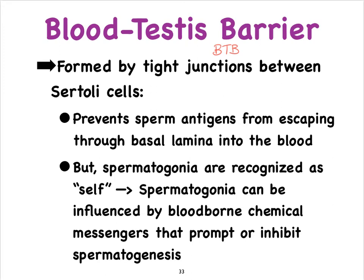It's important for the spermatogonia to be present in the basal compartment, which is exposed to the blood, because those spermatogonia must be able to be influenced by hormones that arrive via the blood to trigger or prevent spermatogenesis from occurring. That leads us to the question: how is spermatogenesis controlled?